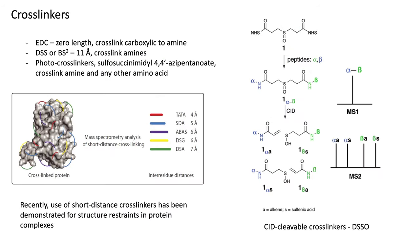There are multiple different types of crosslinkers that can be used. These start with reagents such as EDC, which is a zero-length crosslinker that will crosslink carboxylic to amine residues. These are really nice because they're effectively crosslinking hydrogen bonds. Also common are things such as DSS or BS3, which are traditional crosslinkers of size approximately 11 angstroms that crosslink amine residues. And there are also photocrosslinkers, which can crosslink an amine to any other amino acid after application of UV light.